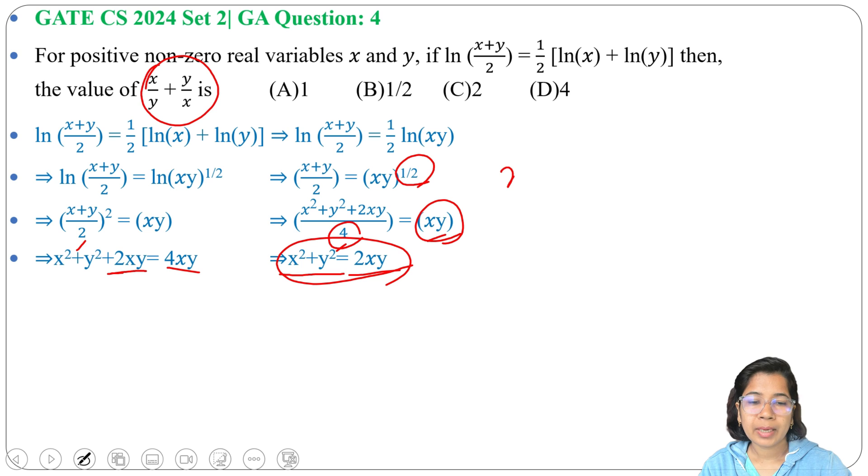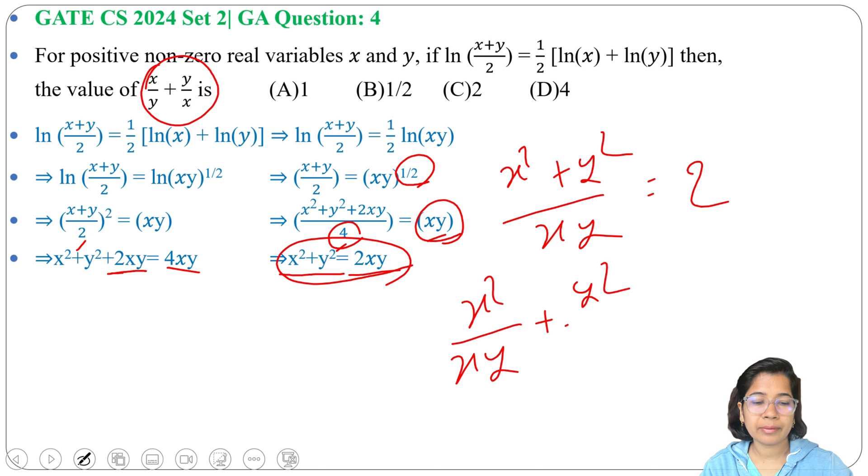Divide x^2 + y^2 by xy to get 2. We can write this as x^2/xy + y^2/xy. This x cancels, this y cancels, giving x/y + y/x = 2.